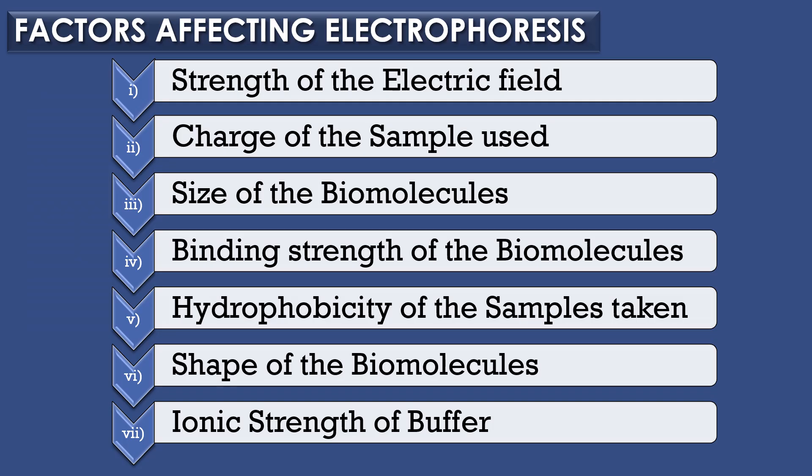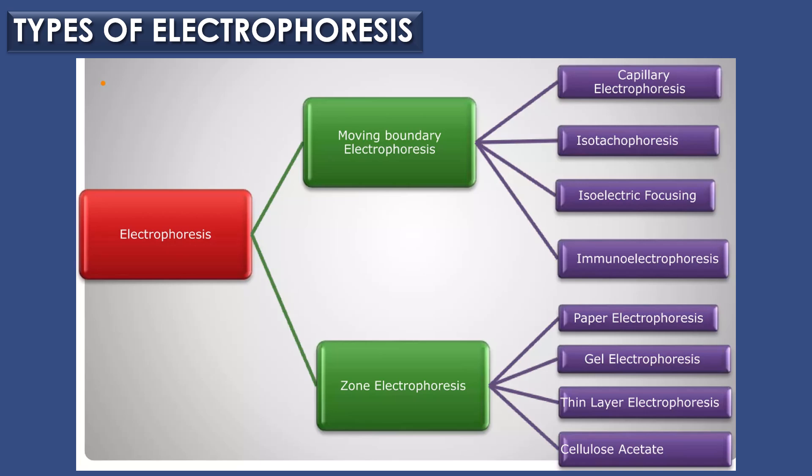Factors affecting electrophoresis: many factors influence the process of electrophoresis. They are strength of the electric field, charge of the sample used, size of the biomolecules, binding strength of the biomolecules, hydrophobicity of the samples, shape of the biomolecule, and ionic strength of buffer.